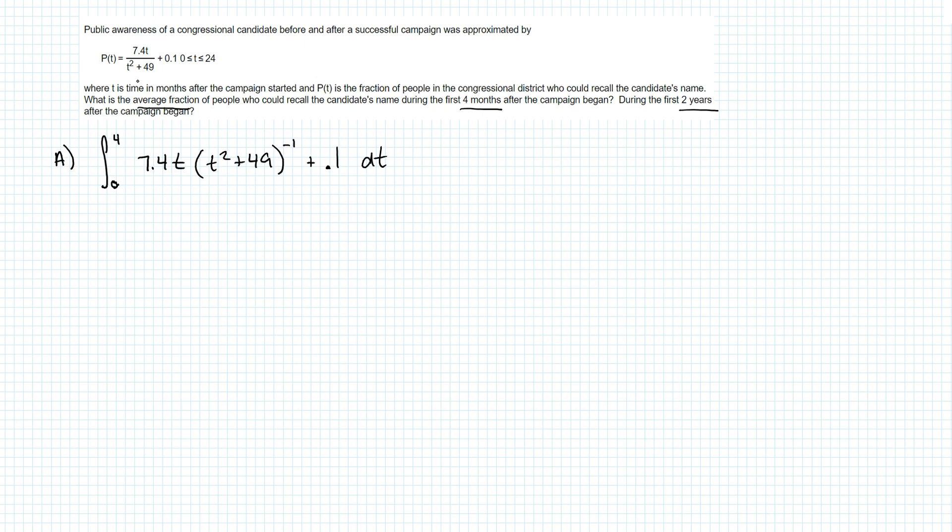So this is the function that they gave us, and if you look at it you're going to notice that this part, this first chunk here, is a substitution integral and the second chunk is not. So I actually have to divide this into two integrals and then I'm just going to add them together when I'm done with it. So this is really the integral from 0 to 4 of 7.4T times t squared plus 49 to the negative 1 plus the integral from 0 to 4 of 0.1.